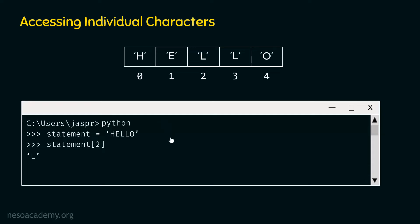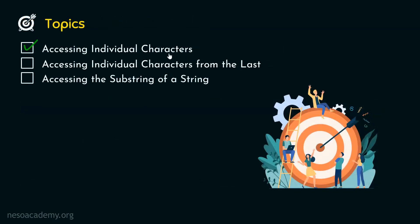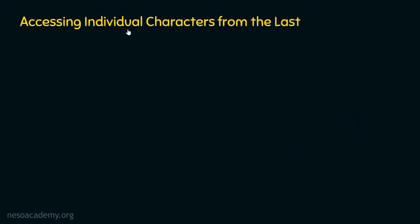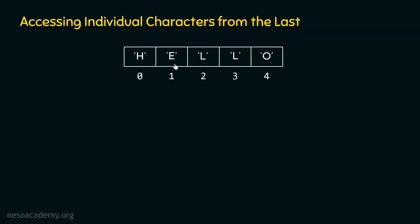Now let's move on to the next topic: accessing individual characters from the last. We can access these characters from the last by using negative indexing. Each character also receives a negative number, called the negative index of that character. The last character receives minus 1.